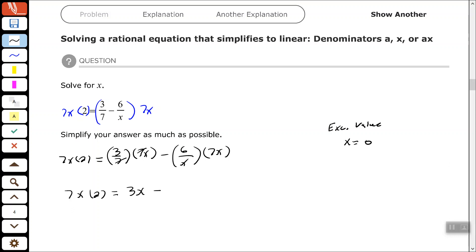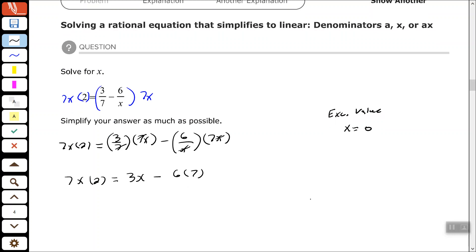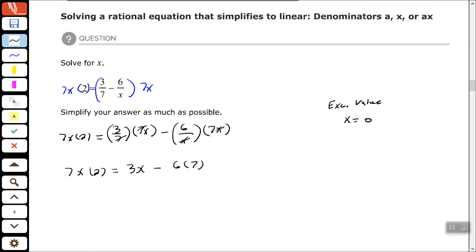And then for the second fraction, I have 6 over x times 7 times x. So the x's will cancel each other out and I'm left with 6 times 7. All right, so 7x times 2 will give us 14x. 6 times 7 will give us 42.